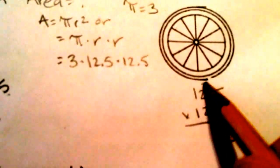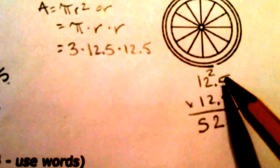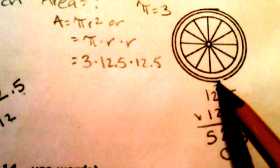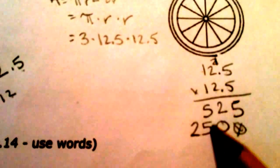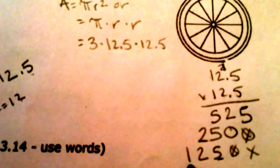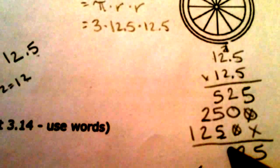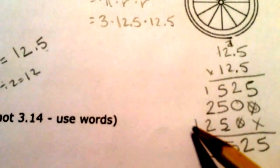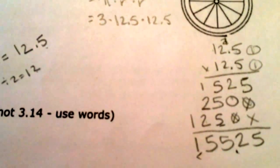5 times 5 is 25, carry my 2. 2 times 5 is 10, 10 plus 2 is 12. 1 times 5 is 5. Alright, so now I have to line it up again. So I was doing here, so I started here. Now I'm going to go under here, so I have to start here. So I'm going to draw my placeholder. 5 times 2 is 10, carry my 1. 2 times 2 is 4 plus 1 is 5. 1 times 2 is 5. 1 times 2 is 2. I'm going to draw my 1. And I have 2 numbers behind the decimal, so 2 numbers behind the decimal. So 1, 55, 25.